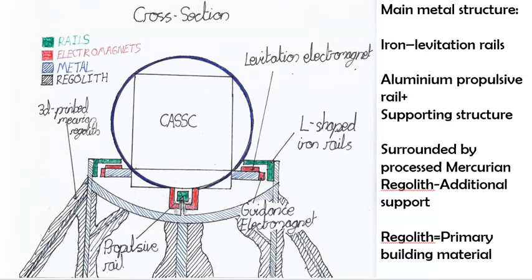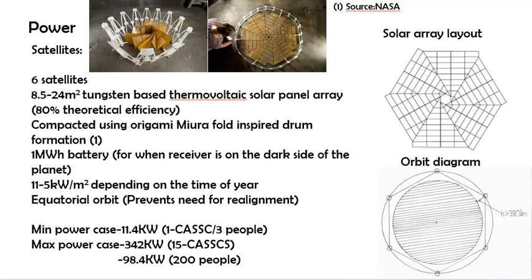Power-wise, we will use at least 8 satellites with thermovoltaic arrays in equatorial orbit at least 380 kilometres above the surface, in order so that the power can be supplied constantly. Each panel will receive 11 to 5 kW per metre squared, with a practical efficiency of 40%.